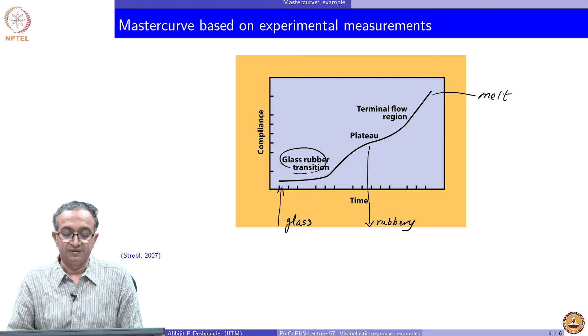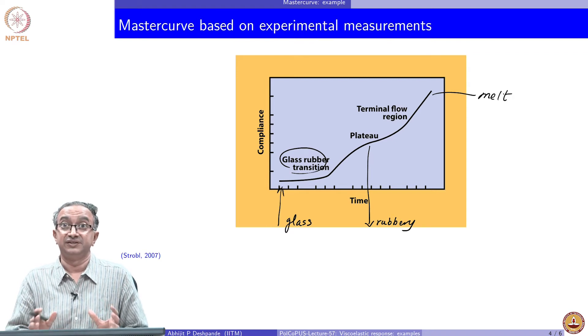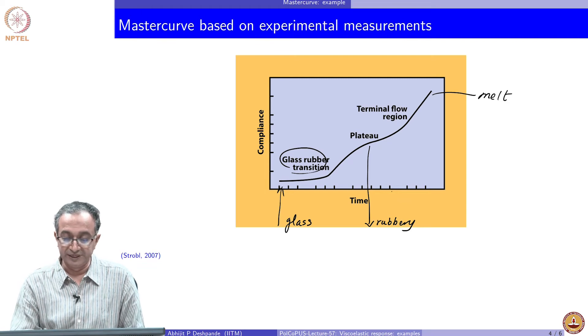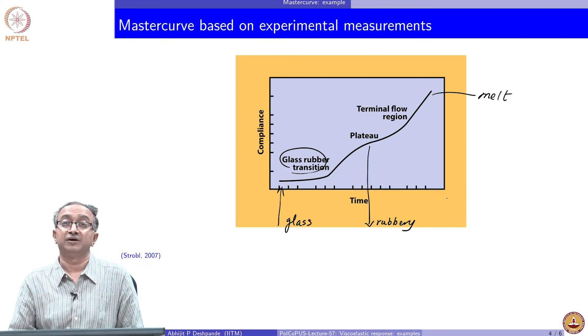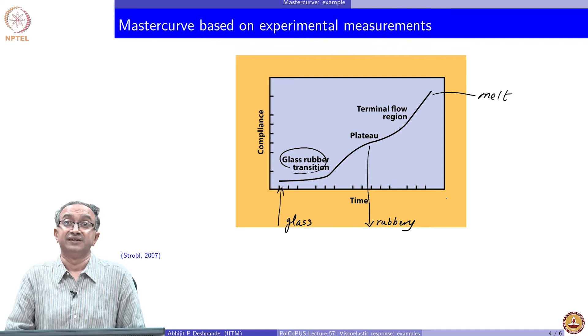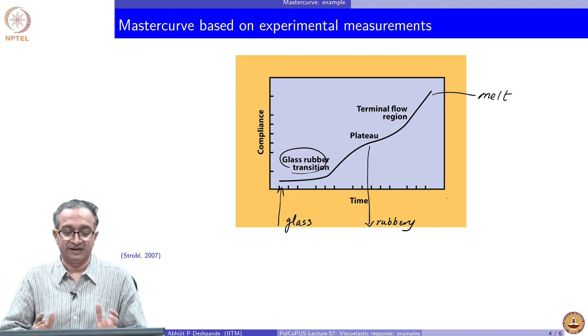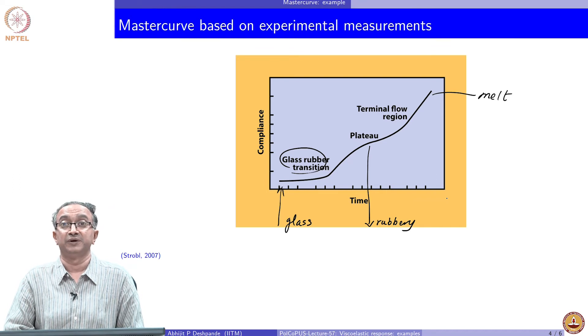And these regions are different over basically a time scale, which can be about 10 to the power 15 seconds. So that is the range of time over which we can analyze the response of polymeric materials using the master curve approach.